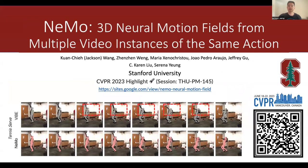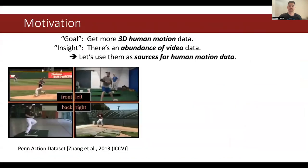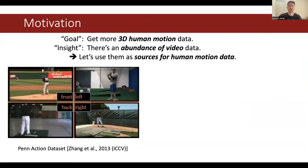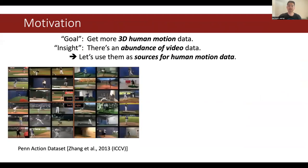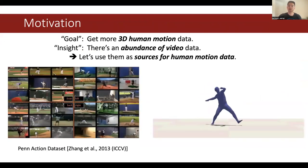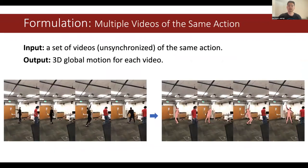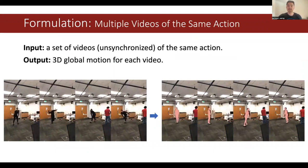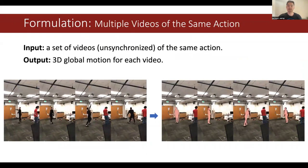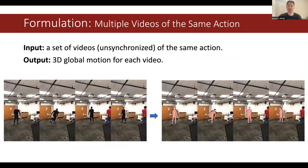We present NEMO: 3D Neural Motion Fields from multiple video instances of the same action. I'm Jackson Wong from Stanford University. Our work starts with the insight that we have collected an abundance of human motion data in the form of videos. So why don't we use them as a source and turn them into 3D human motion data? Our work focuses on the formulation where the input is a set of videos of the same action — different repetitions of the same motion — and our goal is to leverage the shared information across videos to reconstruct more accurate 3D human motion data.